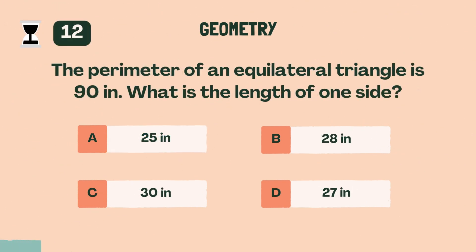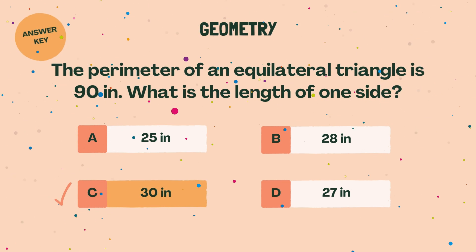The perimeter of an equilateral triangle is 90 inches. What is the length of one side? C, 30 inches.